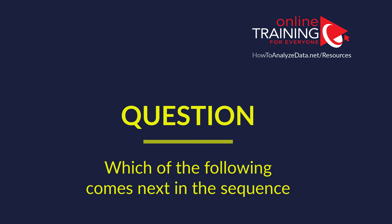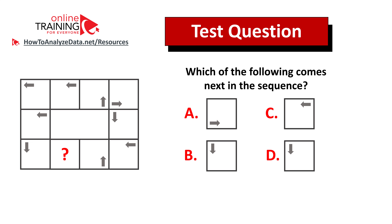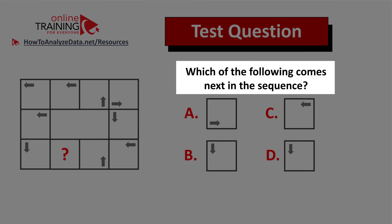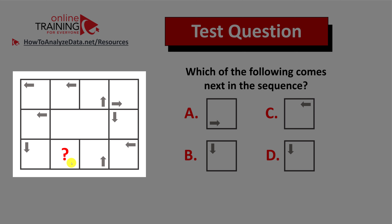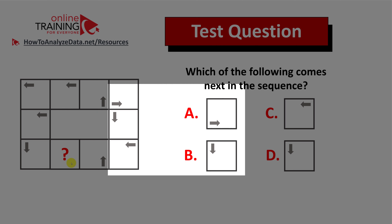Let me share a tricky question which tests your pattern recognition as well as logical reasoning skills. Which of the following comes next in the sequence? You are presented with a rectangle which has multiple squares, and one of the squares is missing — it has a question mark inside. You have four different choices: A, B, C, and D.